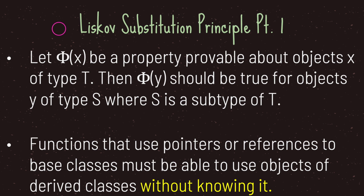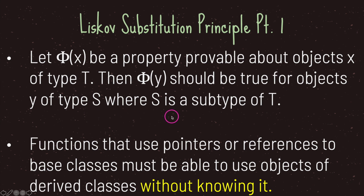Well the general statement for this principle is: let a group of X be a property provable about objects X of type T. Then group of Y should be true for objects Y of type S, where type S is a subtype of type T, and functions that use pointers or references to base classes must be able to use objects of derived classes without knowing it.